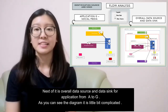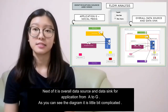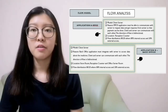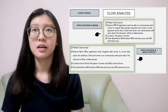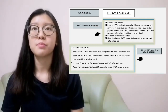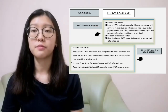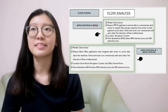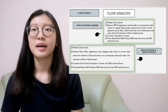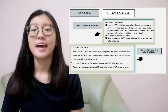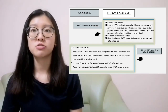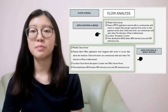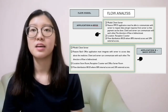For applications A to G, I'm going to present about the flow model analysis. For application A, which is Ampulse, its model is client-server. The reason is because Ampulse must be able to communicate with the server to request data and get a response, so that payment can be done. Client and server communicate bi-directionally. The location for Ampulse is the reception counter, and its flow distribution is 80/20 — 80% internal and 20% external access.